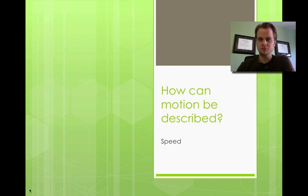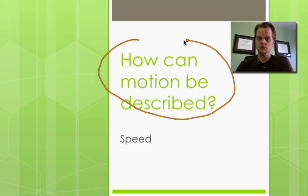Here we are learning about speed. This may seem kind of simple, but there are some really good details that we have to look at. Our main question for this unit is: how can motion be described? We're looking at how we can describe the motion of an object, and right now we're going to just talk about speed.